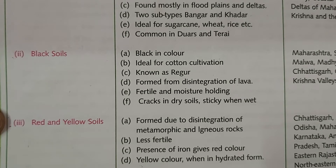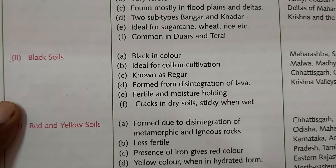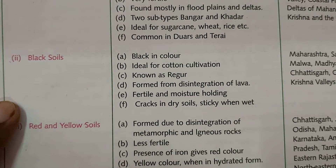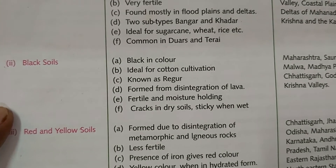Black soil cracks in dry conditions and becomes sticky when wet. This soil has a property of self-aeration — when there are deep cracks, air goes into the soil through them. This is why nutrients are retained in the soil, making it very fertile.